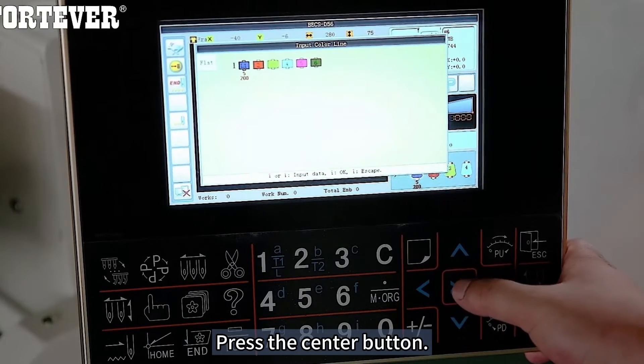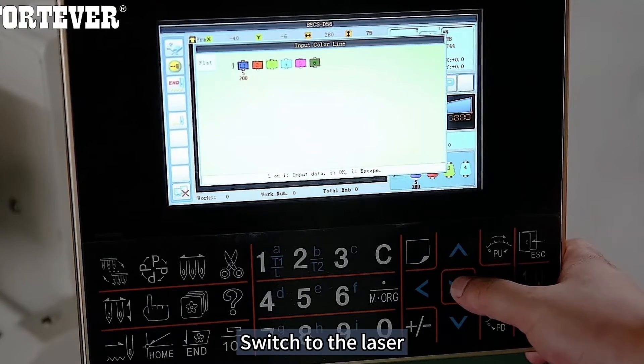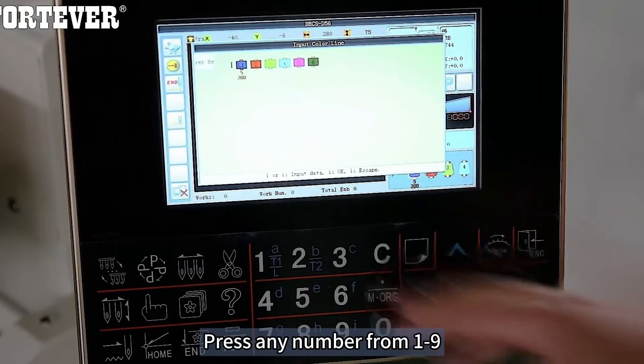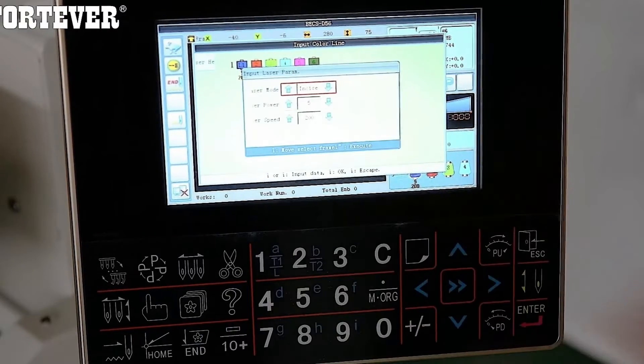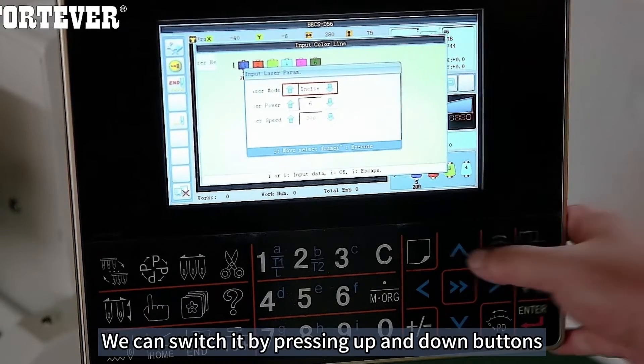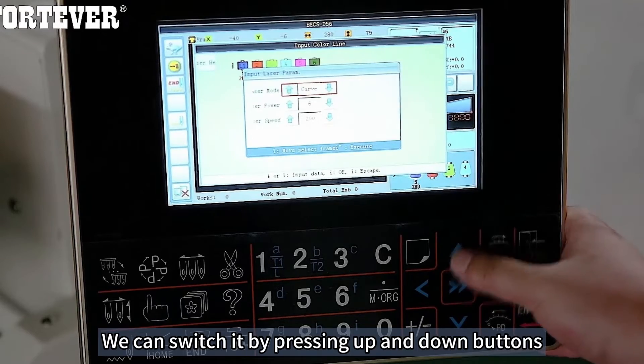Press the center button, switch to the laser. Press any number from one to nine. At the top we can adjust the mode of the laser. We can switch it by pressing up and down buttons.